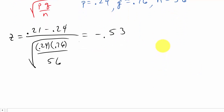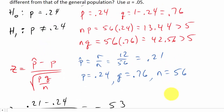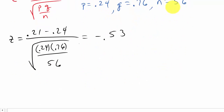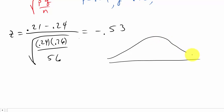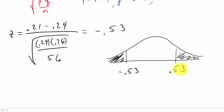We have a two-tailed test because we're saying P is different. That means we care about both tails — here and here — it could be greater than or less than; we're just saying it's different. So our Z value negative 0.53 corresponds to the left tail and positive 0.53 to the right tail. We can look up negative 0.53 to get the area to the left, then double it because we need both tail areas.